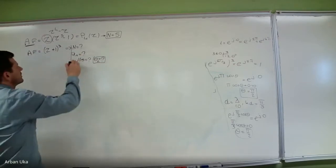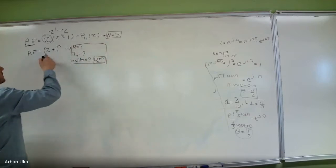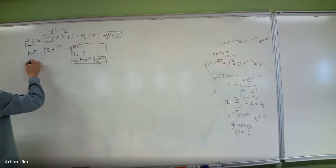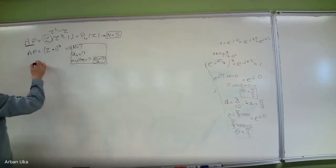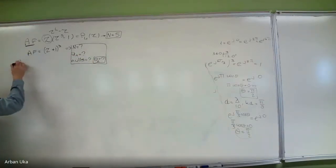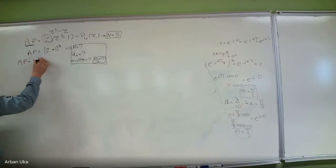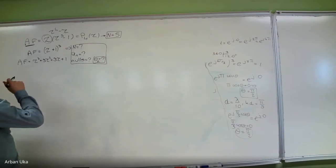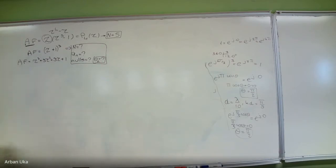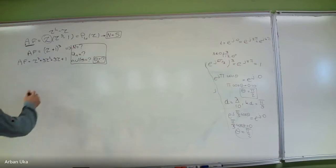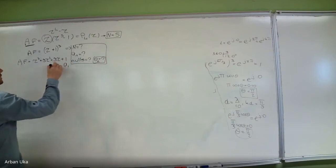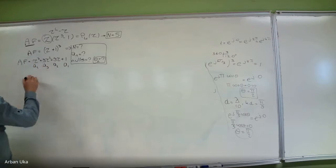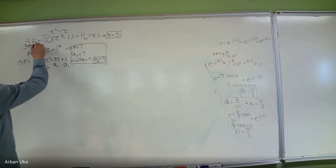all we need to do initially is expand the expression. We can find that the AF is equal to z³ + 3z² + 3z + 1. From this we can determine all the coefficients: a1, a2, a3, and a4.